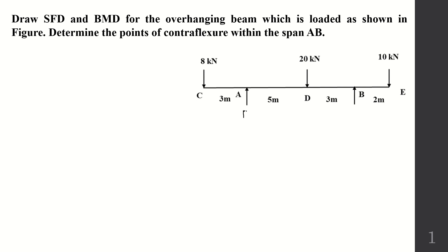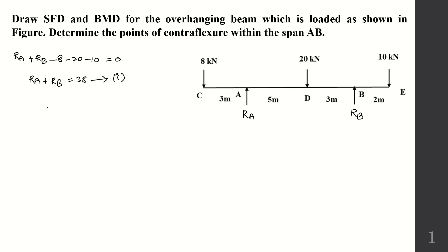First, we have to calculate the reactions at A and B. Taking them as RA and RB, we apply the equilibrium condition ΣV = 0: RA + RB − 8 − 20 − 10 = 0, giving us RA + RB = 38 kN. Keep this as equation number 1.